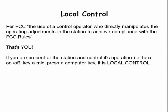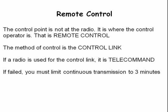The FCC uses the term local control to mean that someone is present at the station and is controlling its operation — usually that is you. If the control point is not at the radio site but where the operator is, that is considered remote control. The method used to control the radio is the control link. If a radio is used for the control link, that is considered to be telecommand. If the control link fails, you must limit continuous transmission to three minutes.